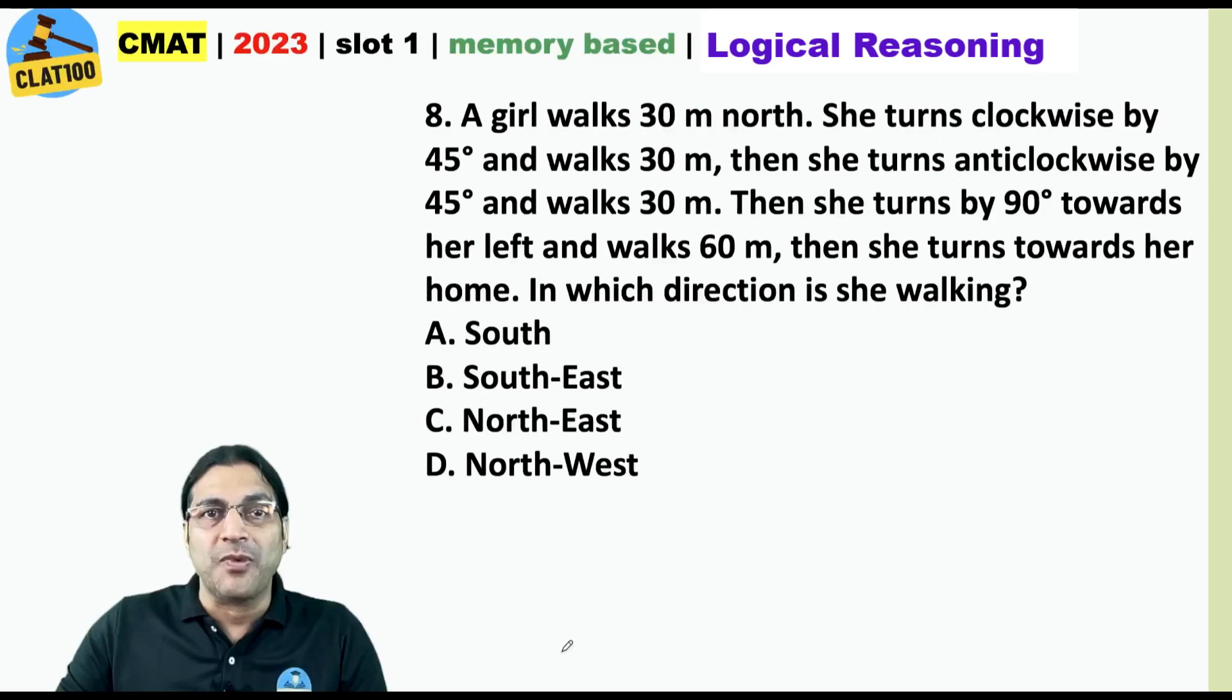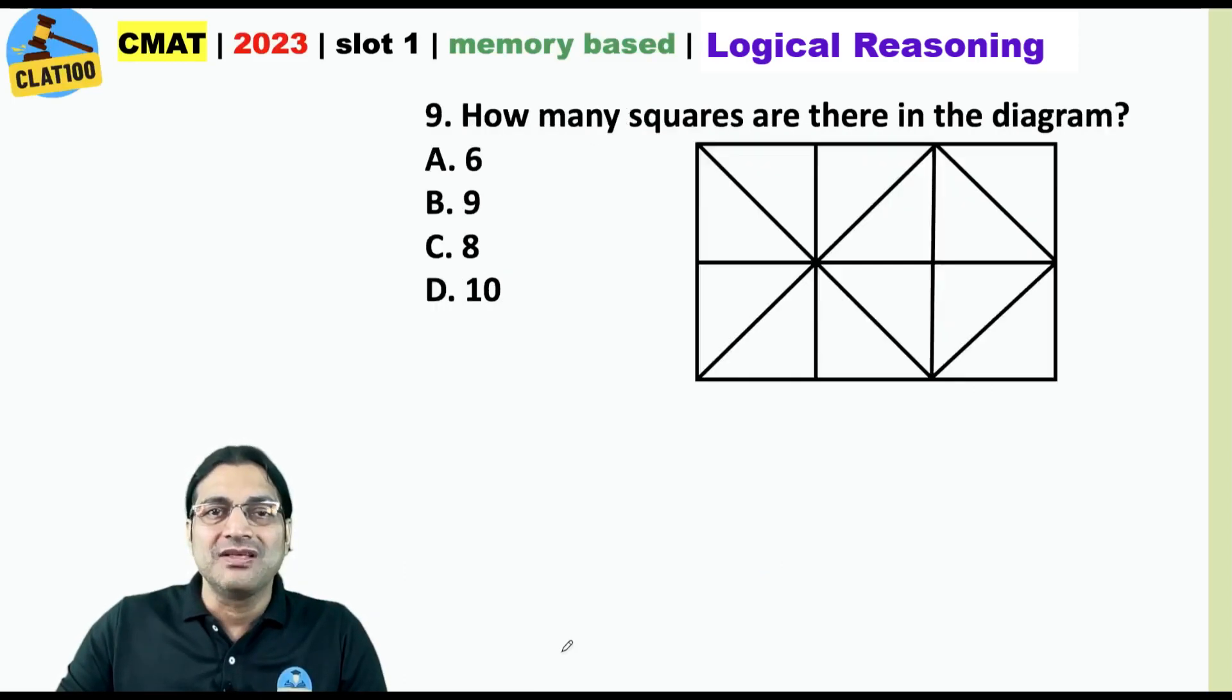Not an iota of doubt about this that the answer is South East and how many squares are there in the diagram? Tell me. 9.